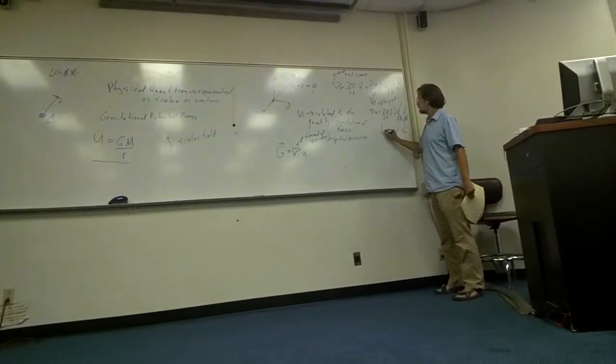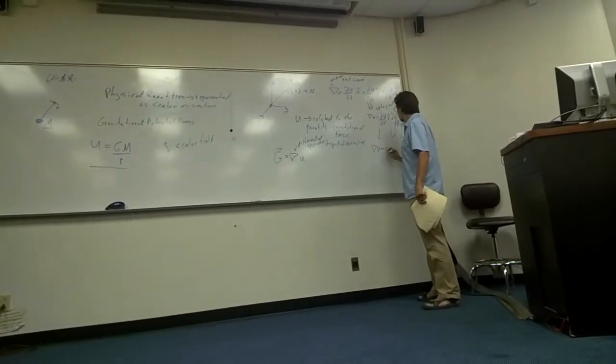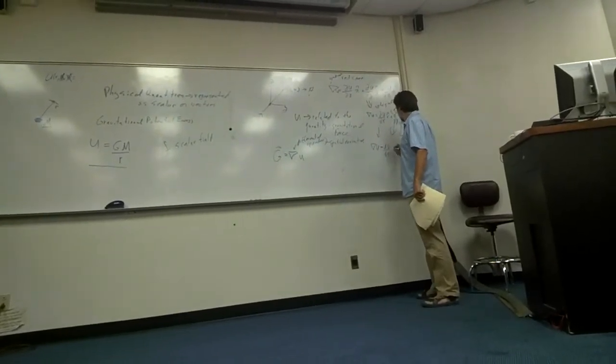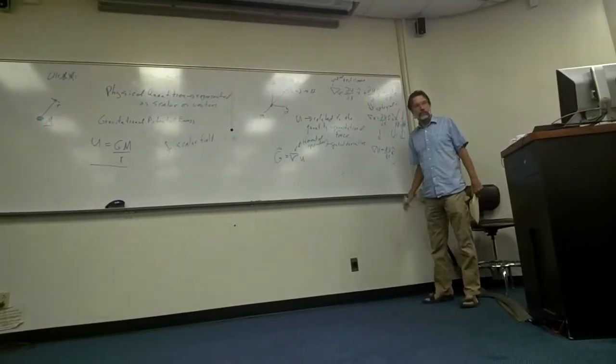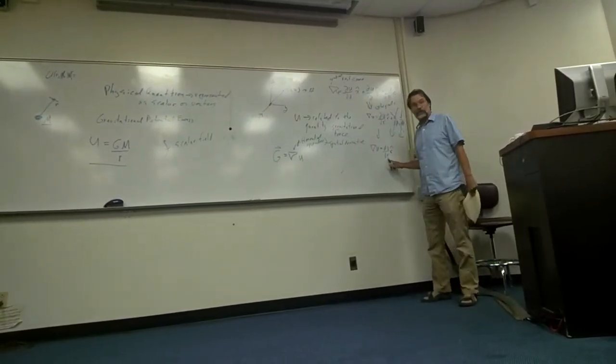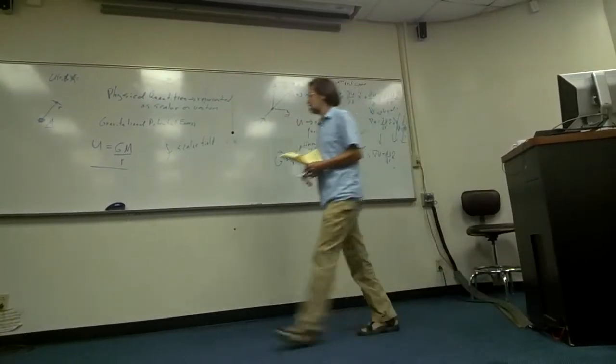because there's no functional relationship between theta and phi in either of those quantities. So those just disappear, and this actually simplifies to so-called del U is just dU/dR, the R-hat, basically it's a rate of change in the U in the R-direction. So that's all this, right? Simplified that way?